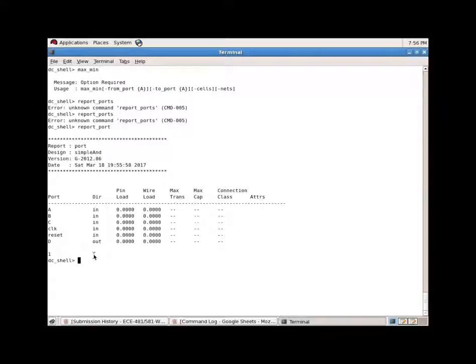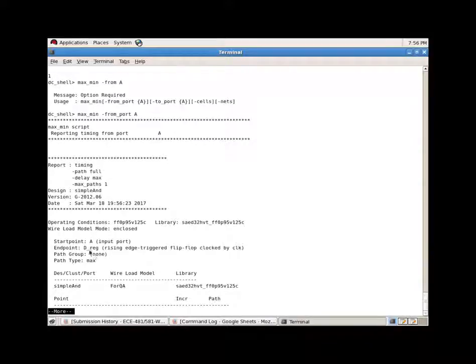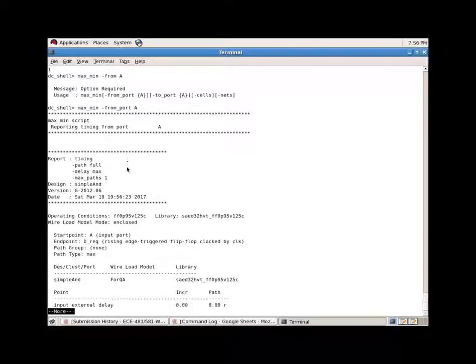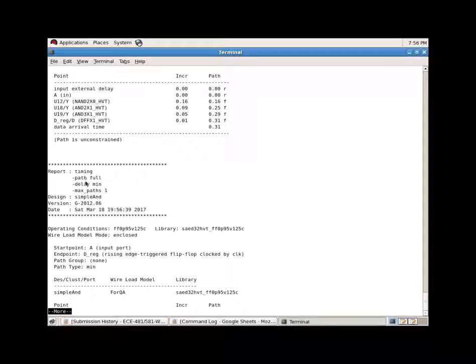Report port. These are the ports that are in the module that we have loaded. Let's find the maximum timing for one path. By default it's one path from port A. This is the timing paths. First thing we see is we are reporting the timing from port A. It calls internally report timing, providing the port information. From that, you can see here the input port and all these cells that are connected to the input port and the timing associated with them. Also by default it shows the minimum and the maximum timing delay. The top one was the maximum and the bottom one is the minimum.